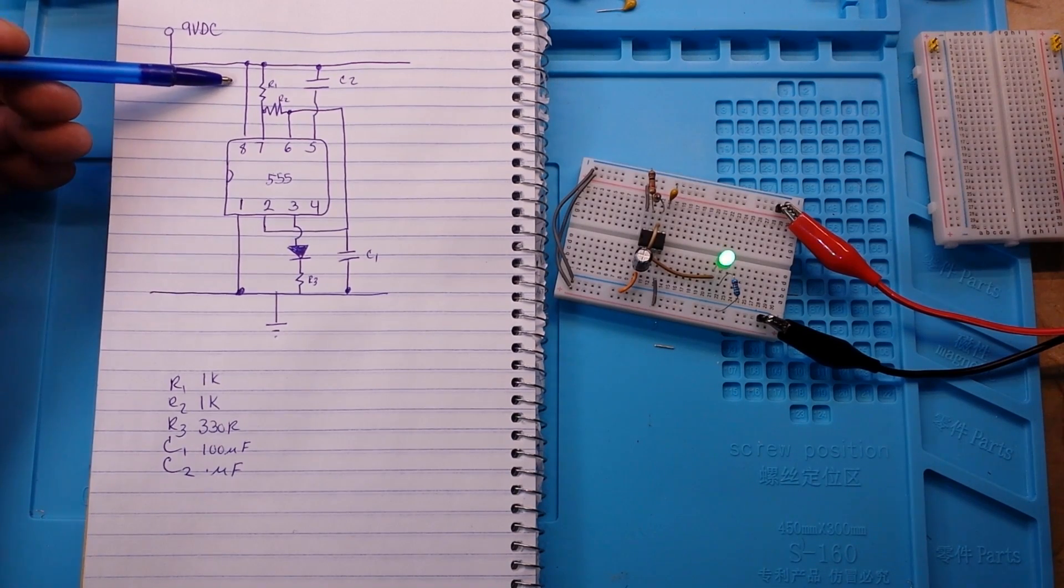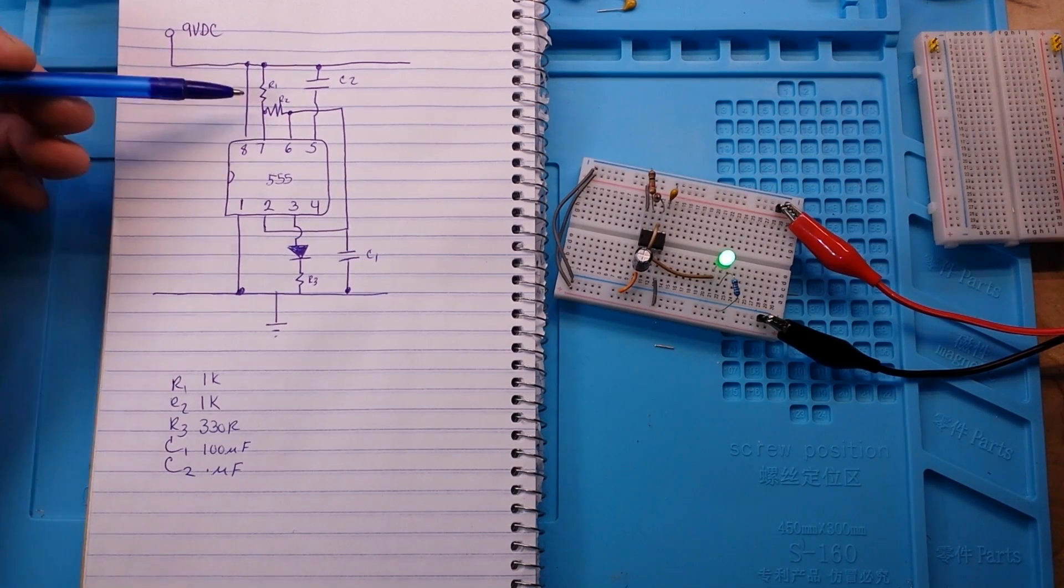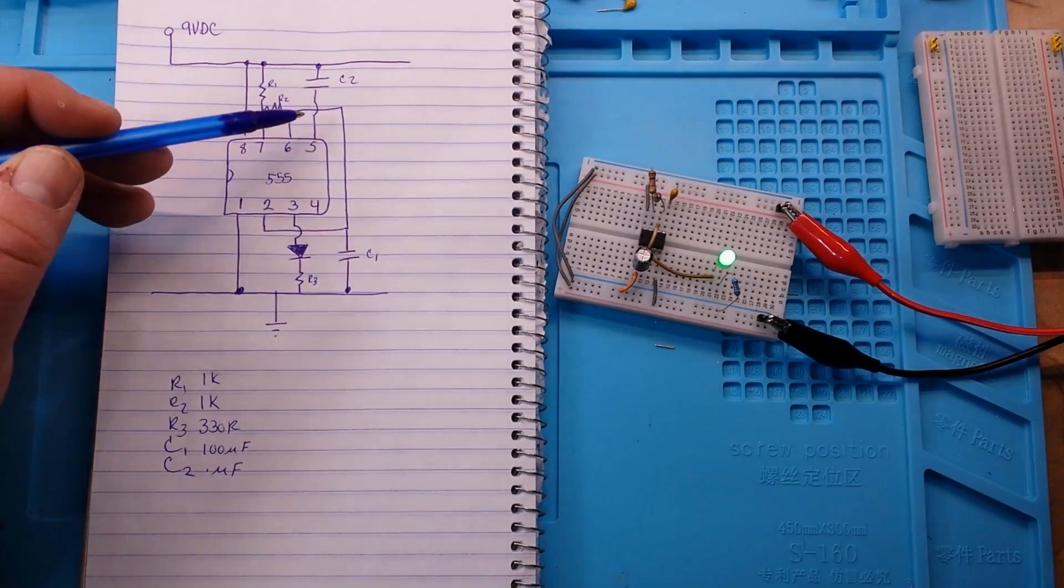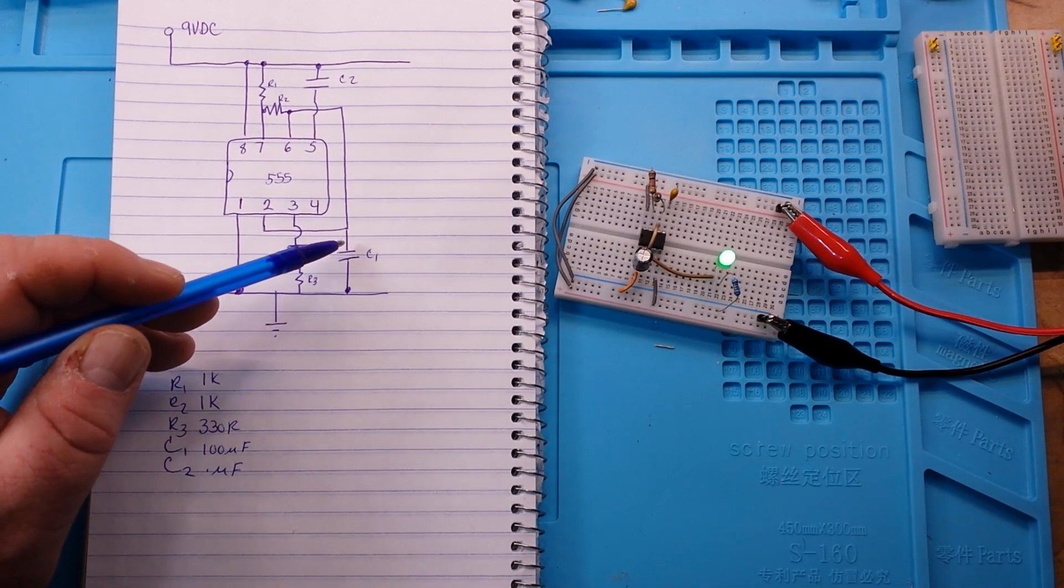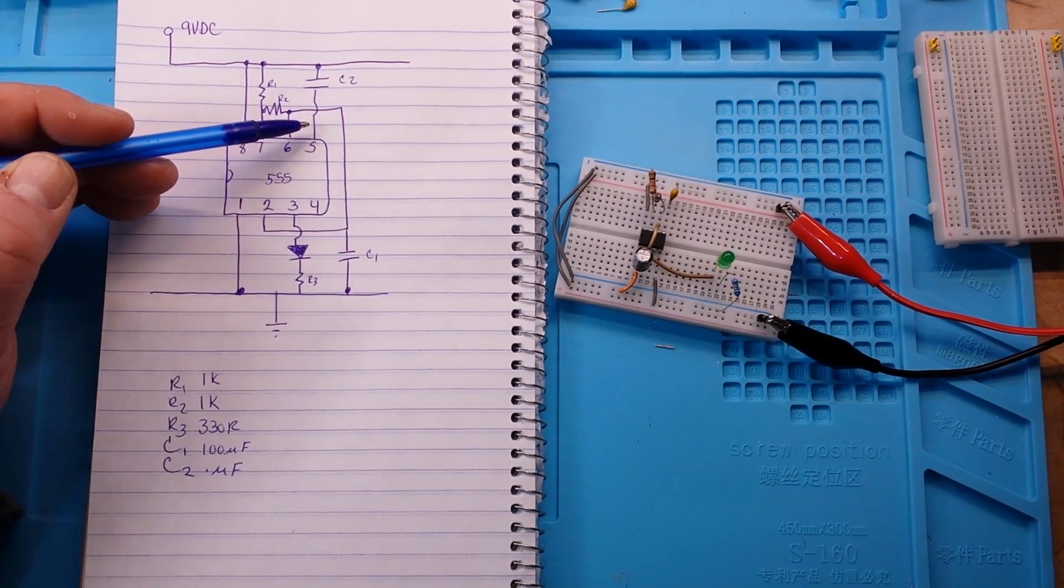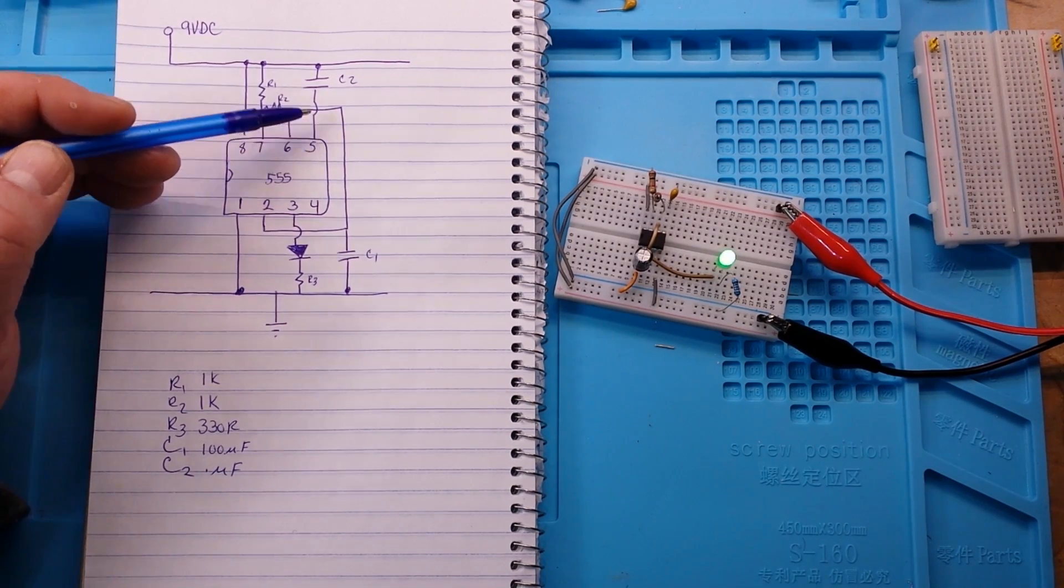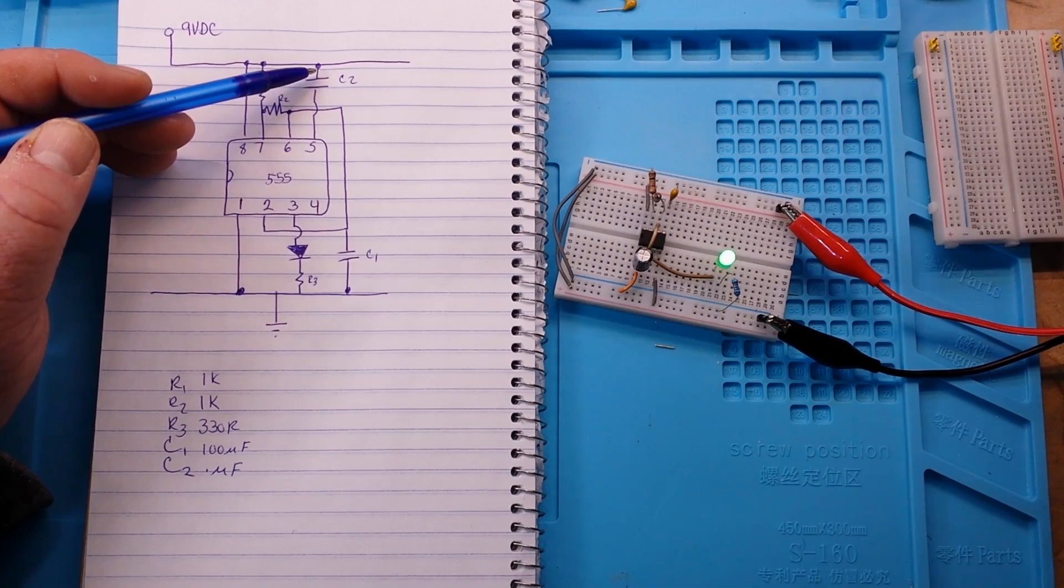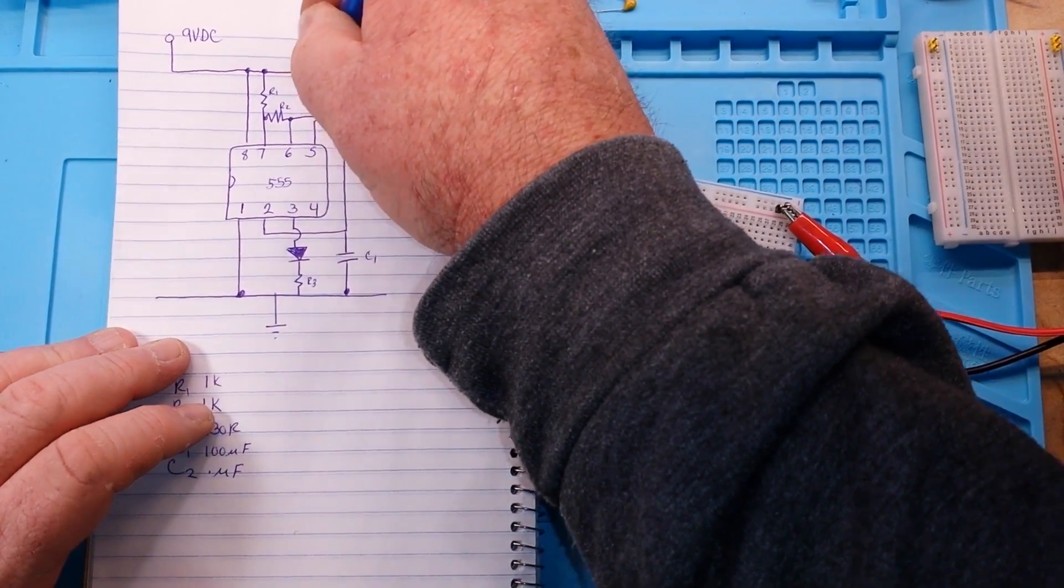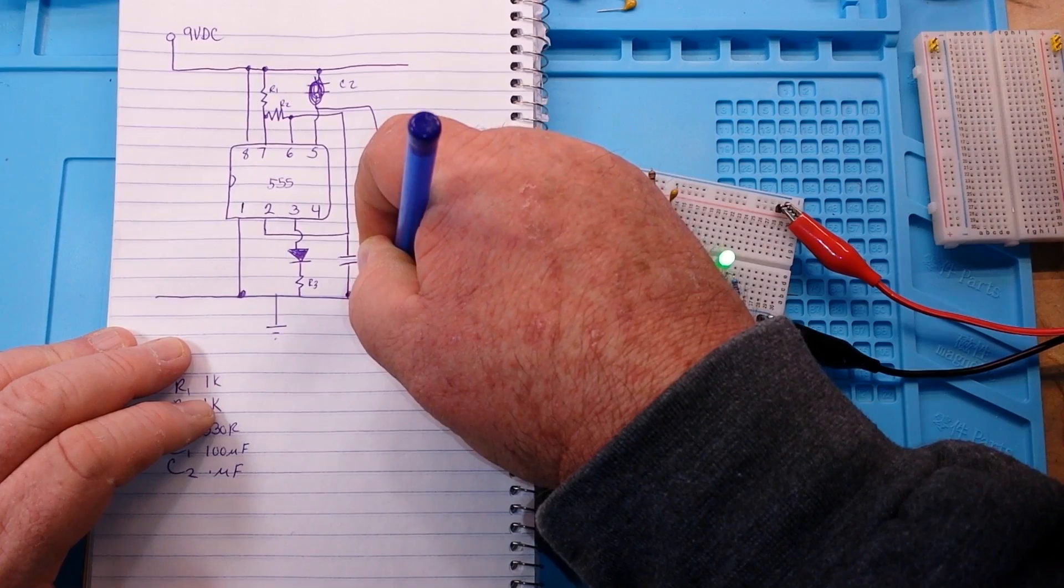Pin 8, our VCC, is connected directly to our VCC. We have a resistor between VCC and pin 7, we have a resistor between pin 7 and 6. Pin 6 also goes around to pin 2 and it has a capacitor, our main timing capacitor, going to ground. Pin 5, the control pin, has a 0.1 microfarad capacitor and that is actually going to ground, my bad on that.